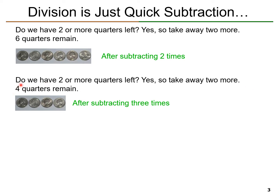Ask yourself: do we have 2 or more quarters left? Yes, 6 is more than 2, so we take away 2 more quarters. And now we have 4 — 1, 2, 3, 4. After doing 3 subtractions, we have 4 quarters.